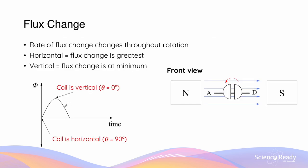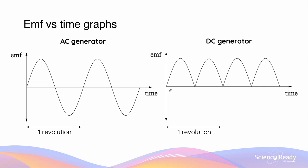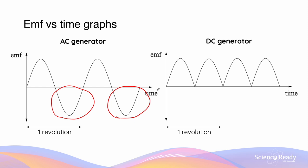The way flux changes in a DC generator is similar to that in an AC generator — the flux also changes sinusoidally. The rate of flux change is the greatest when the plane of the coil is parallel to the direction of the magnetic field, and becomes zero when the plane of the coil is perpendicular to it. However, since direct current does not change direction like alternating current does, the induced EMF remains positive in the DC generator. A simple way to understand this is that the EMF versus time graph for a DC generator is the absolute value version of that in an AC generator — parts of the graph that are negative are flipped about the x-axis.